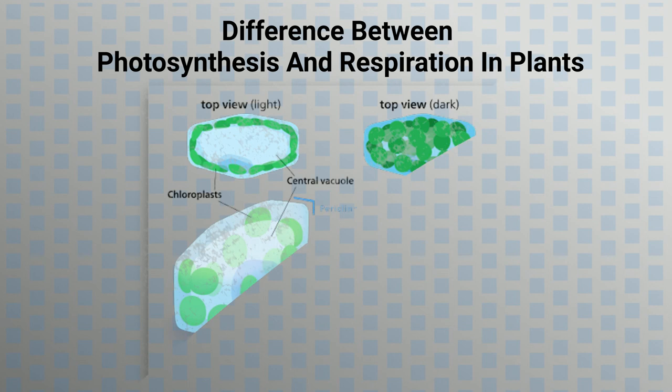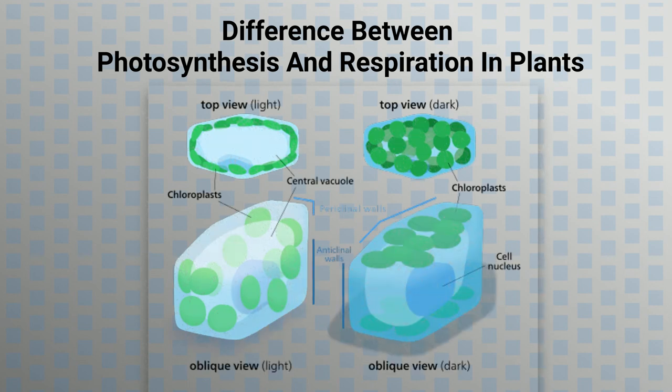2. Photosynthesis takes place usually in only green chloroplast containing leaves, but respiration takes place in all cells of all parts of the plant.